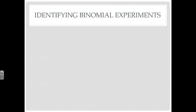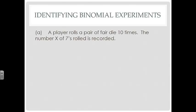Let's see if we can identify some binomial experiments. A player rolls a pair of fair dice ten times, and the number X of sevens rolled is recorded. Is our experiment performed a fixed number of times? Yes, ten times. Are the trials independent? If I roll and get a seven the first time, does that affect whether I get a seven the second time? No — so they are independent.